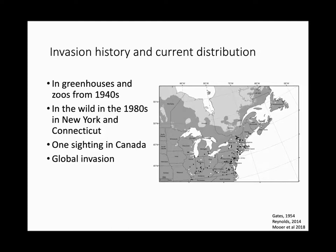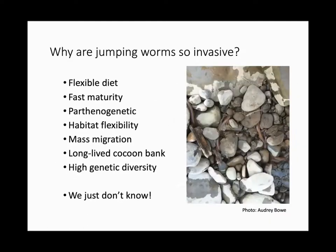Jumping worms were in greenhouses as far back as the 1940s around New York City. They were noticed in the wild in the 1980s in New York and southwestern Connecticut. There's only one confirmed sighting in Canada, so New York is kind of the barrier between very high invasion near New York City and almost completely uninvaded areas near the Canadian border. This is a global invasion — found in the Galapagos, Brazil, and Europe.